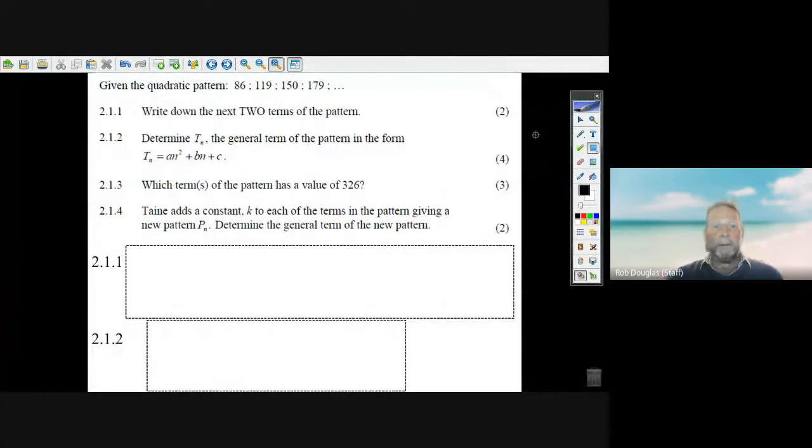Okay, we're going to look at the next question in the Eastern Cape Paper 1 2020, and it's a question about a quadratic pattern, a quadratic sequence. The first question is write down the next two terms of the pattern. Well, if they give you the first, second, third, and fourth terms like this.